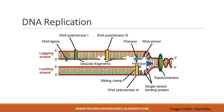Another enzyme called RNA primase synthesizes an RNA primer that is about 5 to 10 nucleotides long and complementary to the DNA. RNA primase does not require a free hydroxyl group because this sequence primers the DNA synthesis — it is appropriately called the primer. DNA polymerase can then extend this RNA primer by adding nucleotides one by one that are complementary to the template strand.